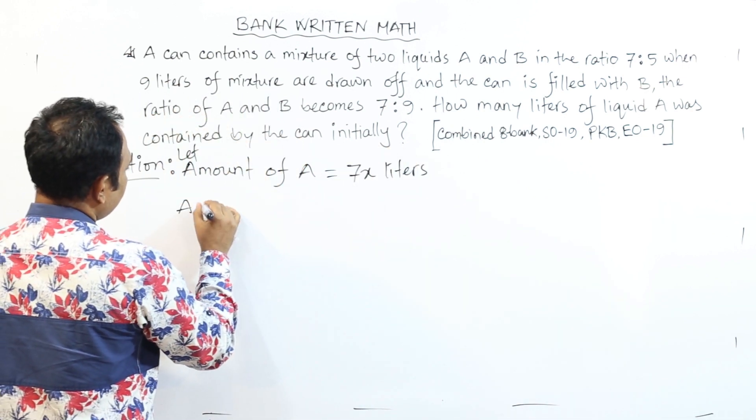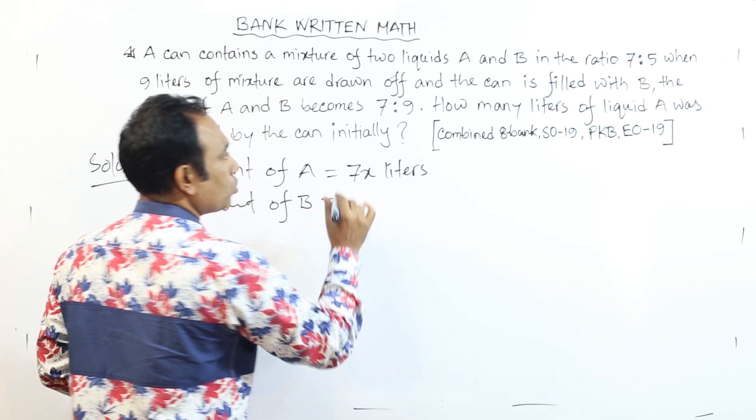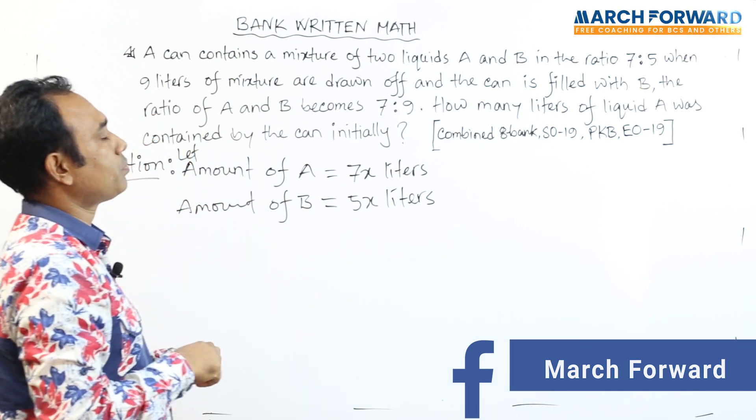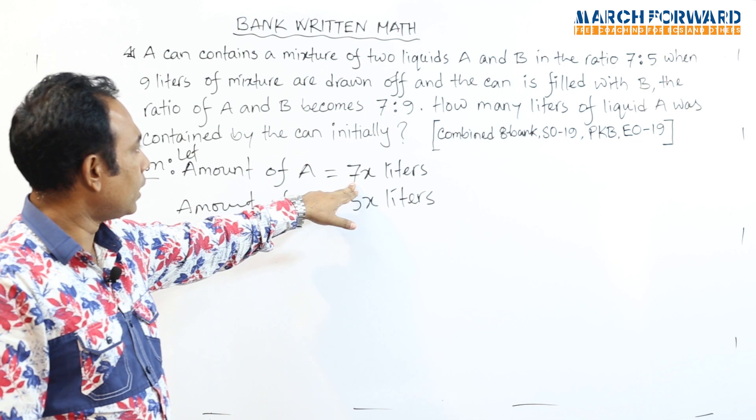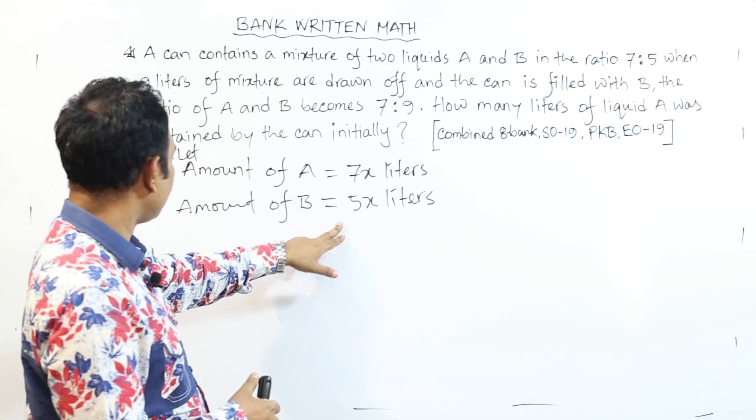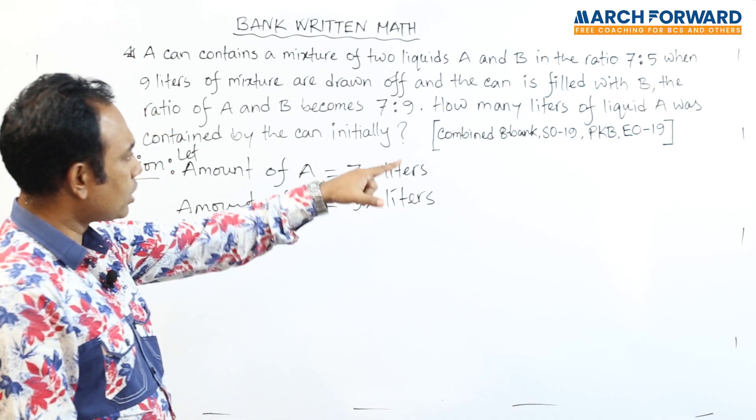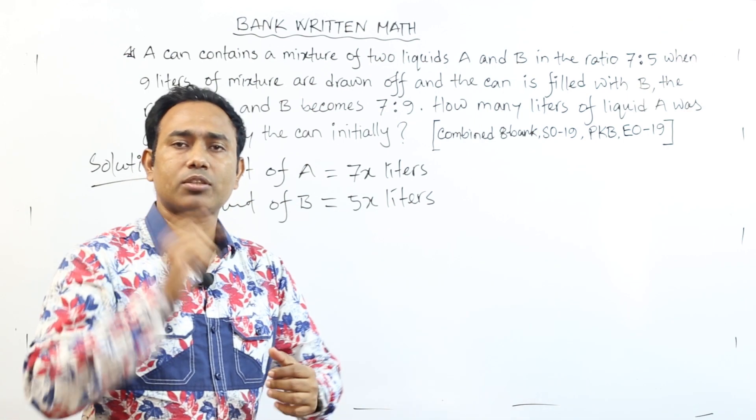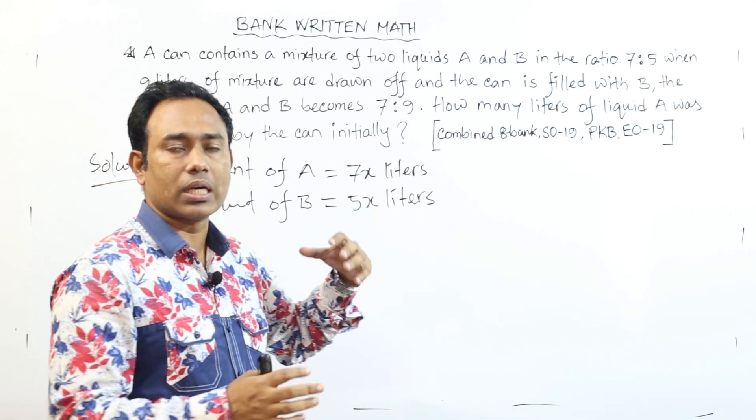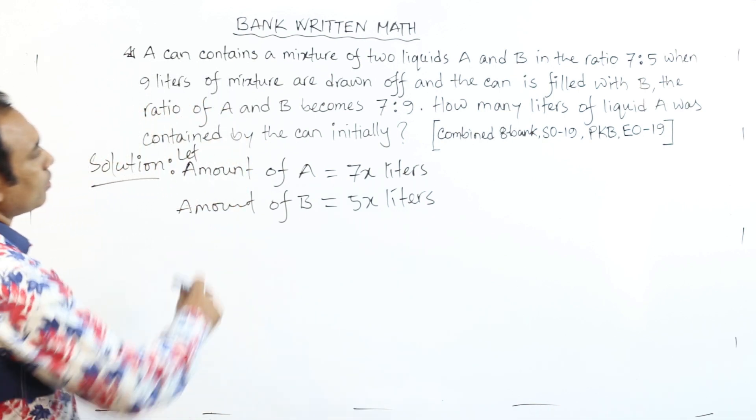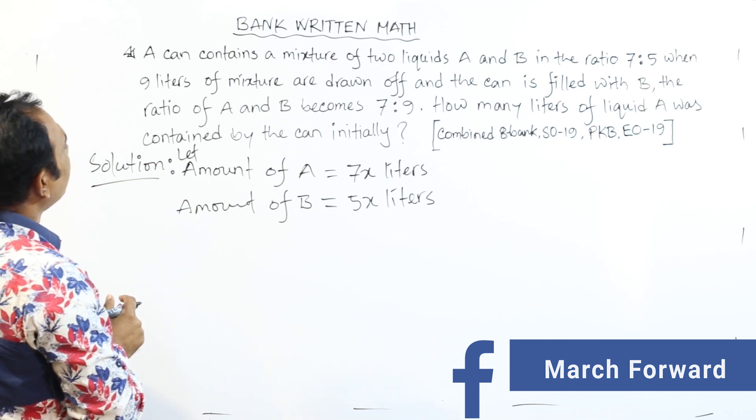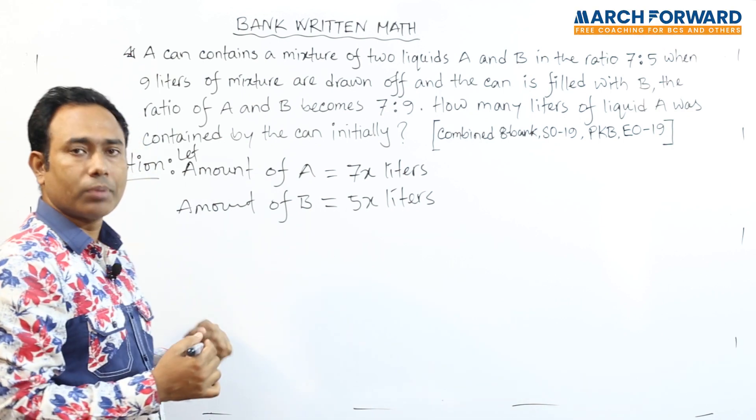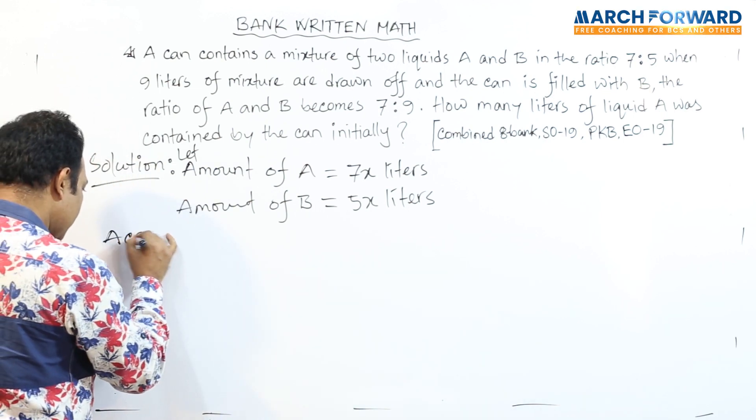The amount of B is 5x liters. How can liquid A start with liquid A? 7x is 7x. If we multiply by x, whatever answer we get, that will be our answer. According to question, we can write this in equation form.